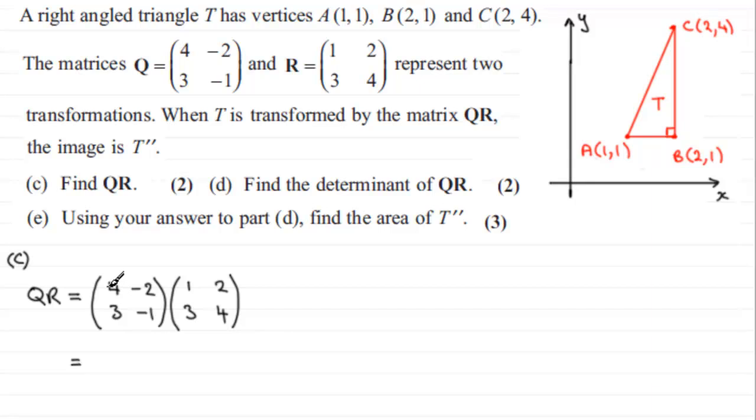When we take the top row here, we do 4 times 1 plus -2 times 3. So that's 4 minus 6, and 4 minus 6 gives us -2. Now we do top row times the end column. So it's 4 times 2, which is 8, plus -2 times 4, which is -8. 8 minus 8 is 0.